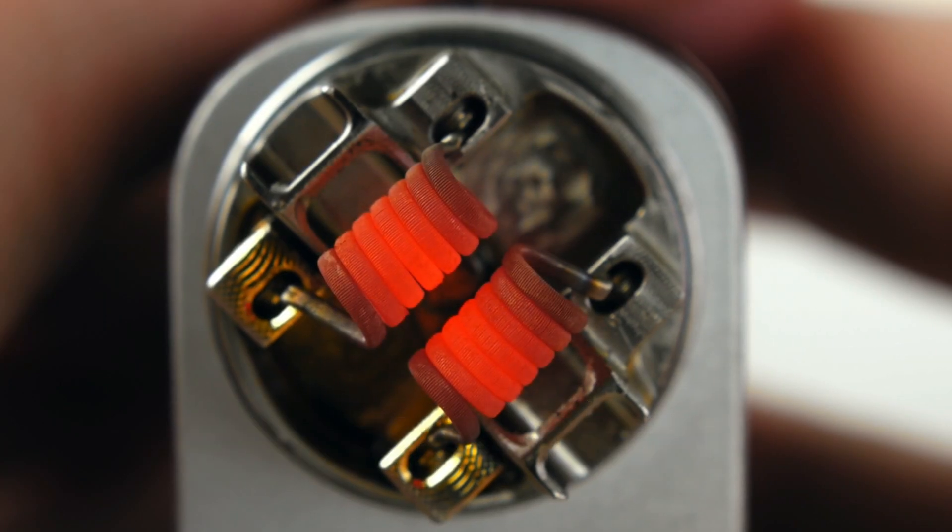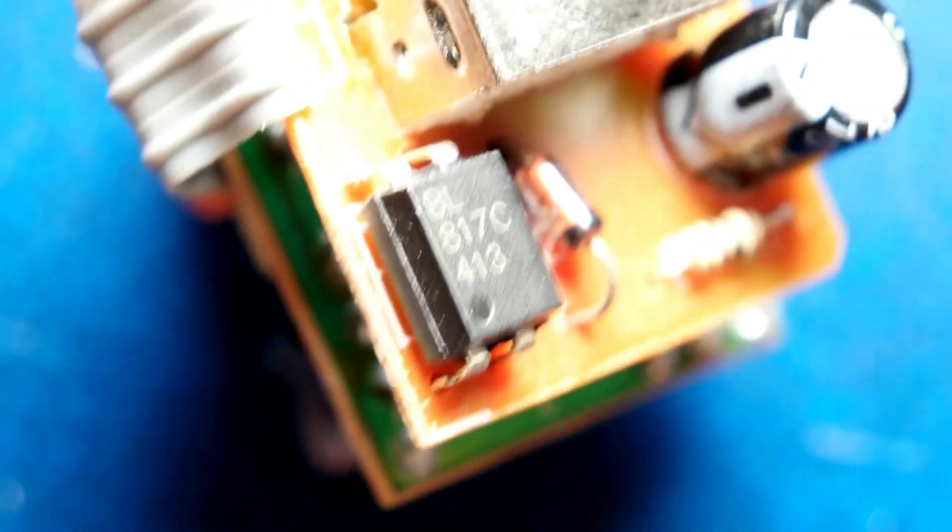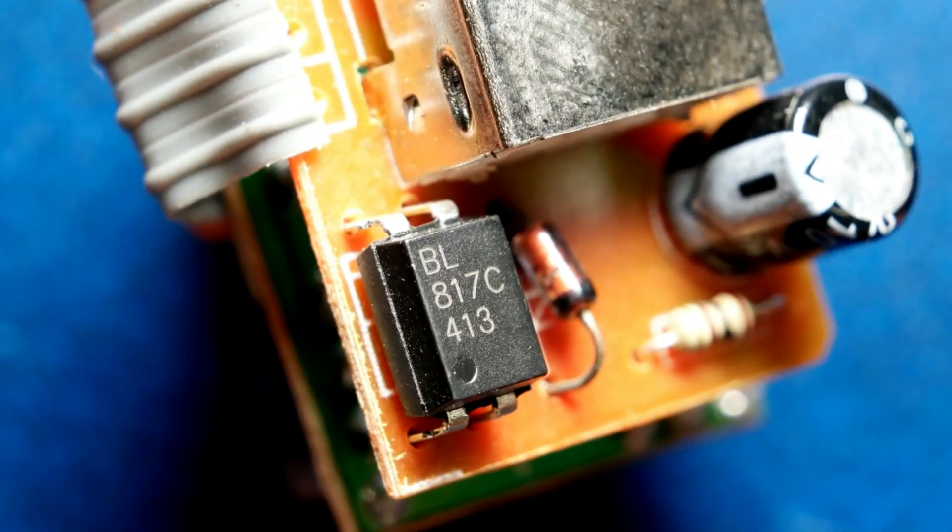Fuses generate heat when they blow, so they should be placed away from heat-sensitive components. Adequate spacing and ventilation should be provided to dissipate the heat generated by the fuse.